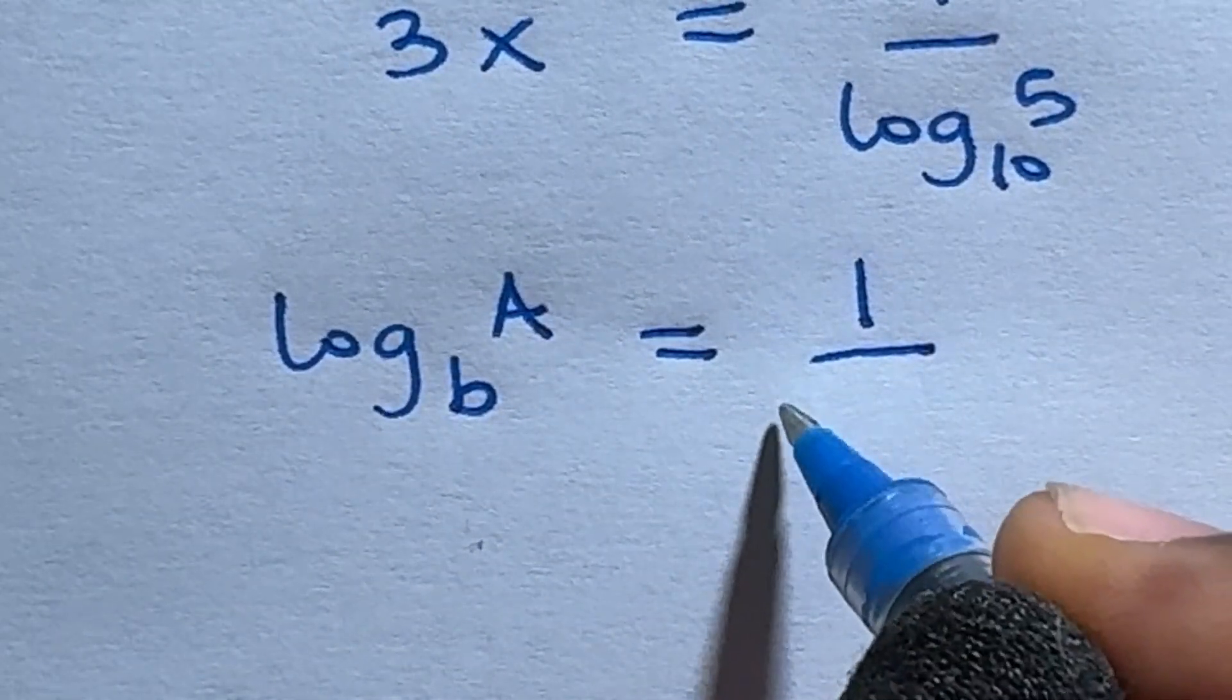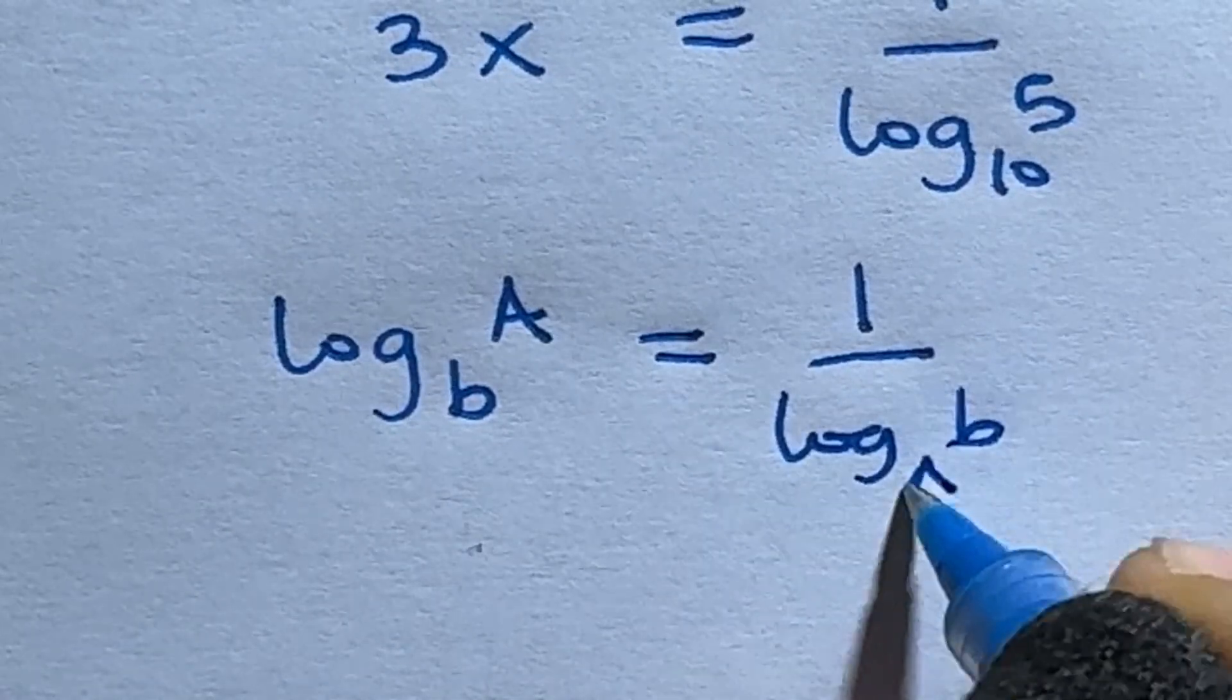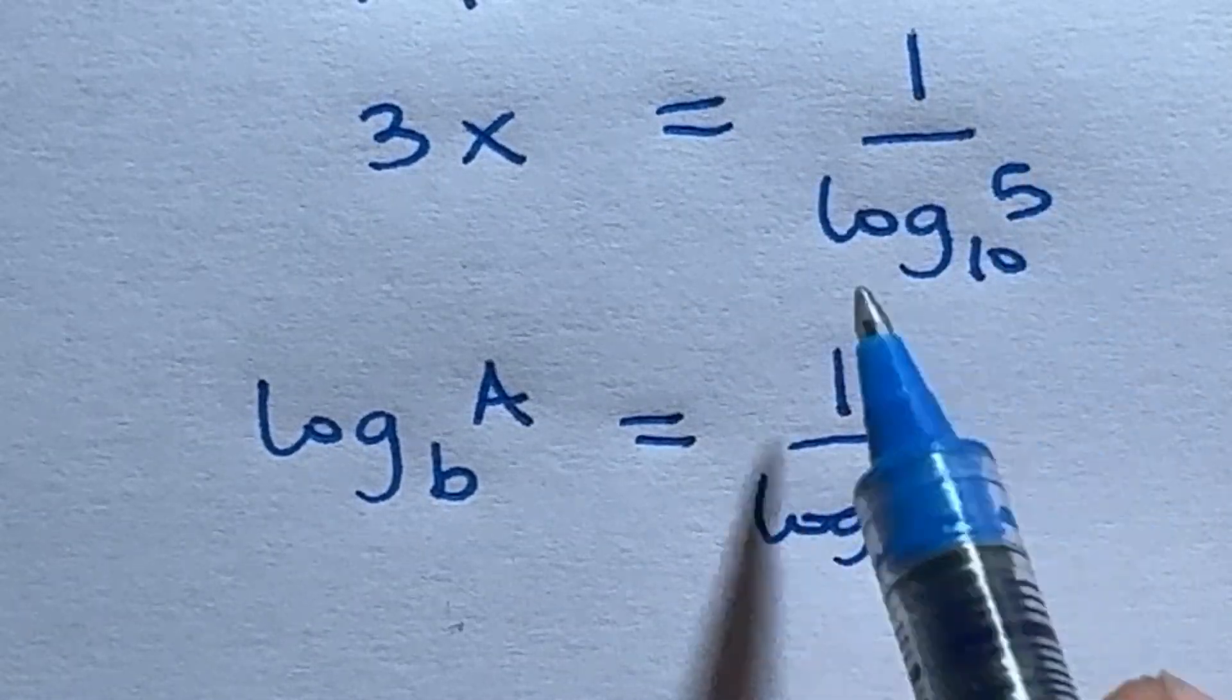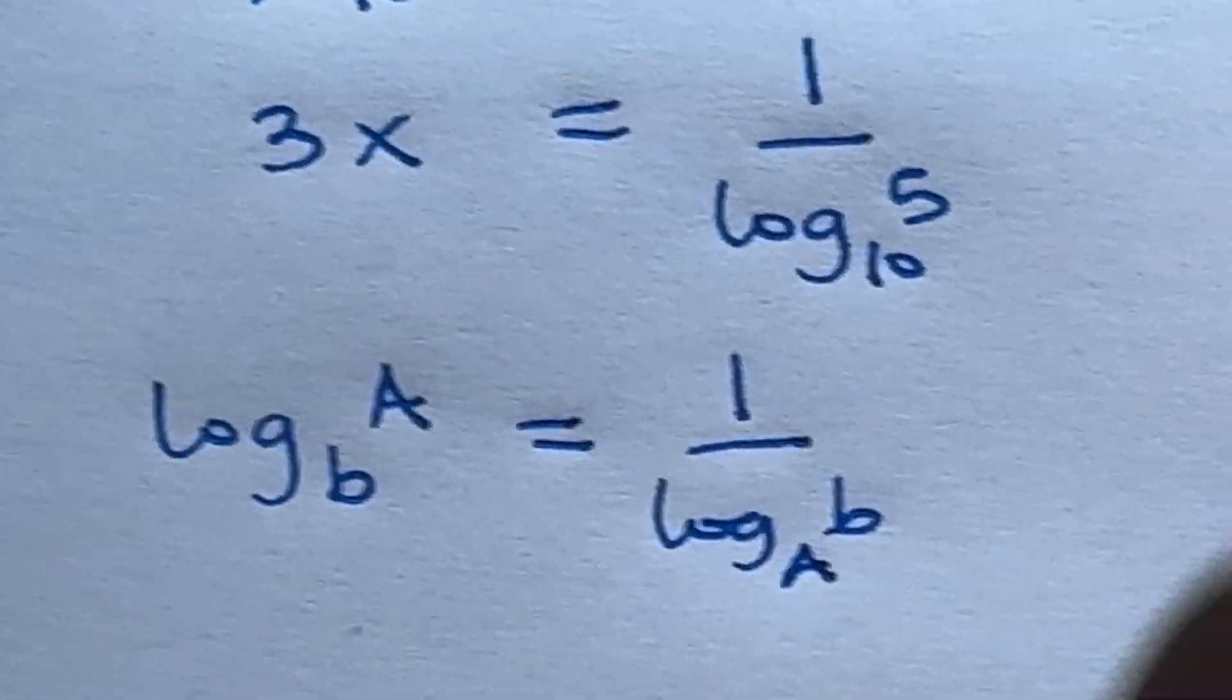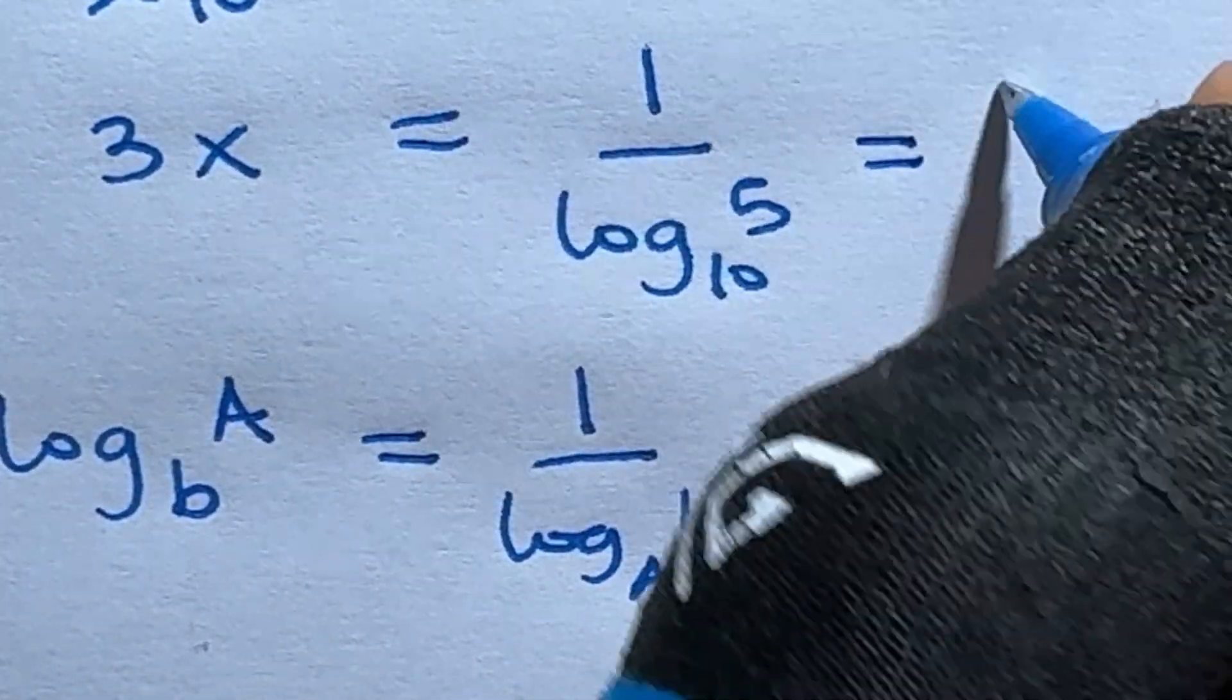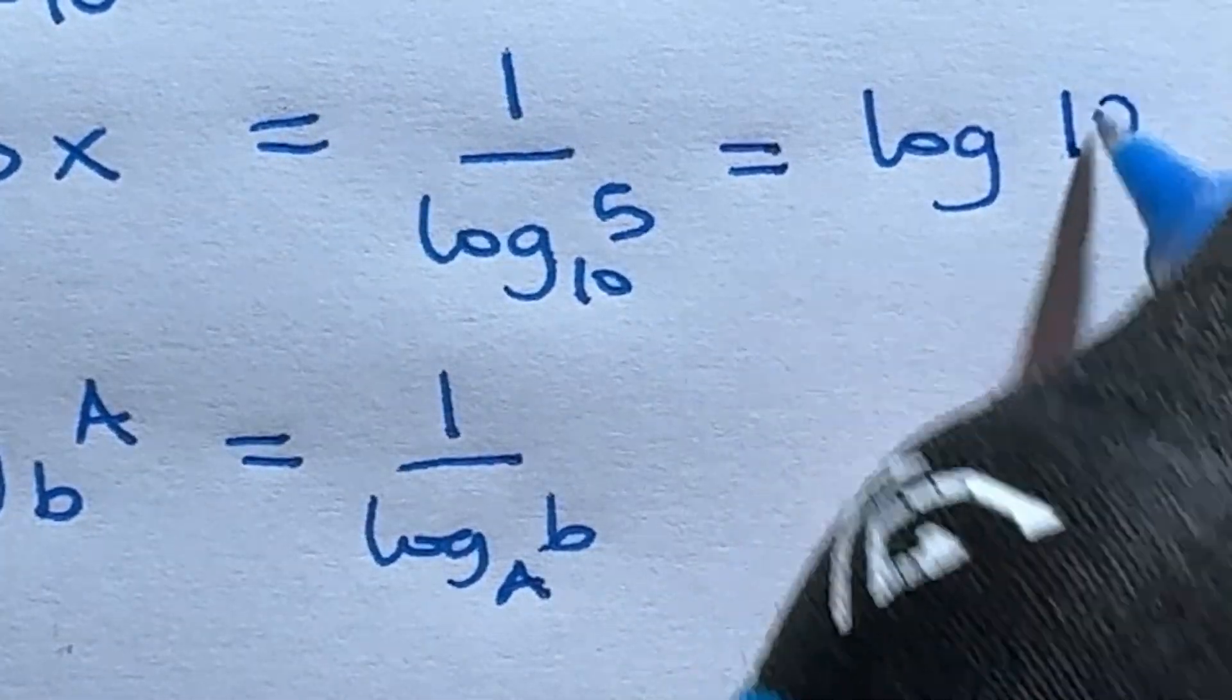So this will simply be log b base a. If we are going to work backwards with this 1 over log 5 base 10, it means that 3x is now equal to log 10 base 5.